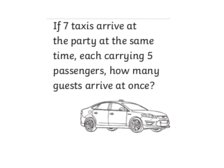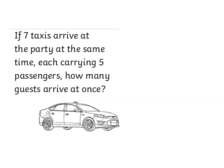What about this problem? It says, if 7 taxis arrive at the party at the same time, each carrying 5 passengers, how many guests arrive at once? Now, I could solve this problem by skip counting — by going 5 plus 5 plus 5 and doing that 7 times. Or I could use my multiplication facts, which would be much more clever. So, 7 taxis each carrying 5 passengers — 7 times 5 — and that will tell me how many there are altogether.